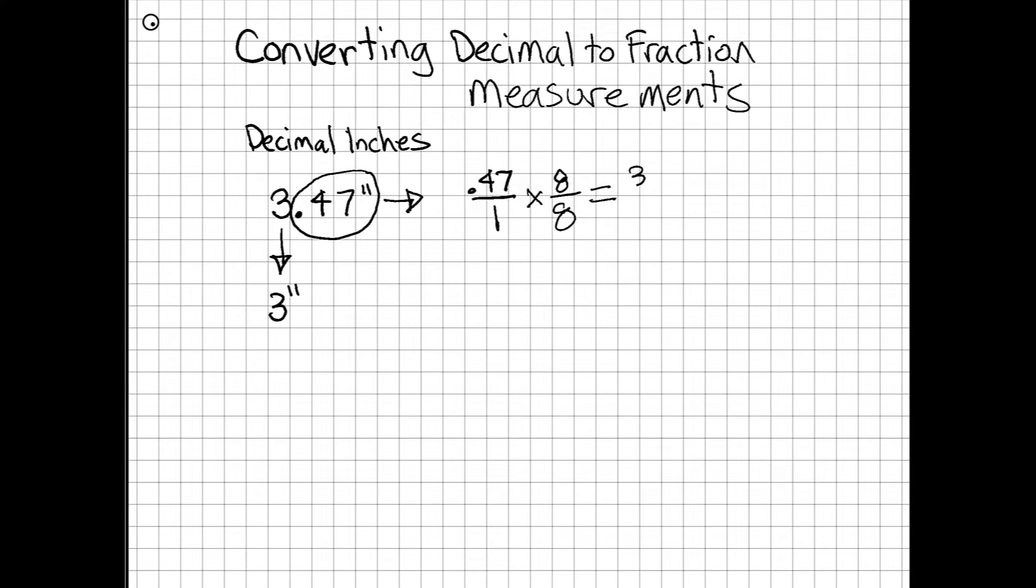I get 3.76 over 8. I used my calculator on the top number there. 3.76, though—wait a second, that's still a decimal. That's not what I wanted. I want a fraction. At this point, I just need to round up or down. Let's just forget that decimal thing on the top. I need to go up or down and then I'll have my fraction.